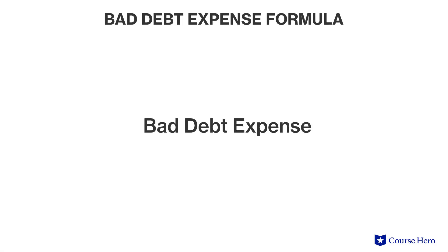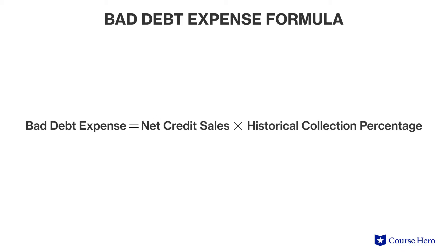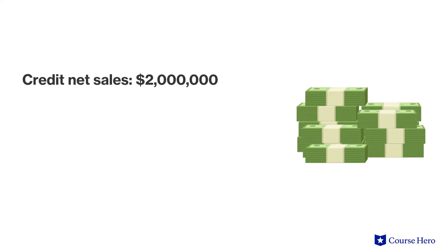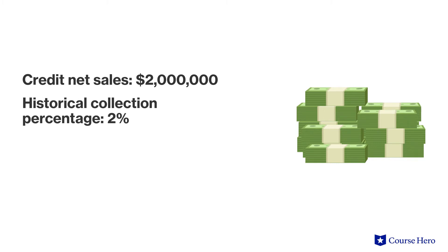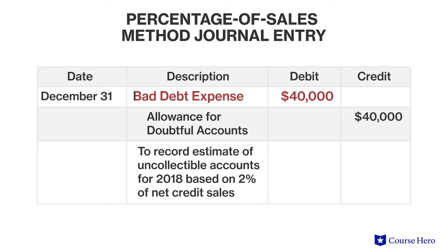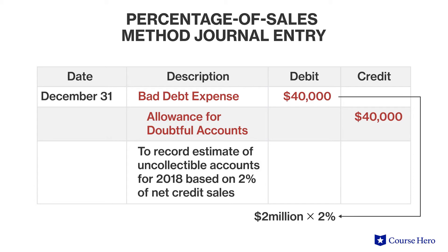Bad debt expense is simply the amount that results from multiplying net credit sales by the historical collection percentage determined by the company, which includes considerations such as current customers and industry conditions. Suppose that Fusco Body Works reports two million dollars in net credit sales for the calendar year ended December 31st, 2018. Based on past collection experience, Fusco estimates that two percent of net credit sales will become uncollectible. Fusco would compute bad debt expense and the allowance for doubtful accounts as forty thousand dollars, or two percent of two million dollars.